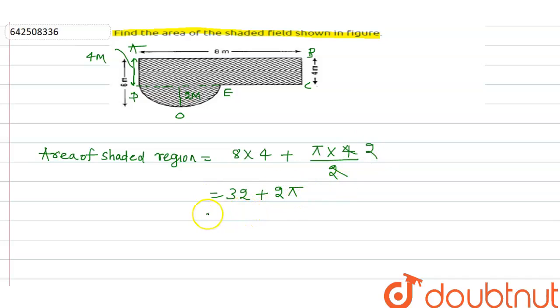If you put the value of pi, what we get is 32 plus 6.28, so we get 38.28 meter square. So this is our answer. Thank you.